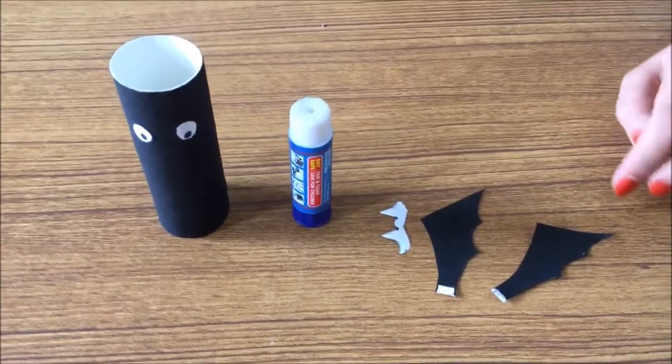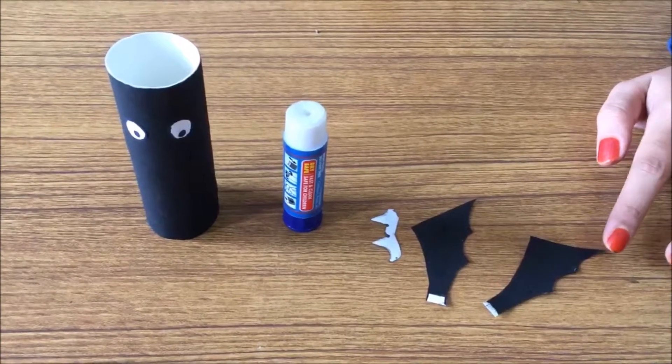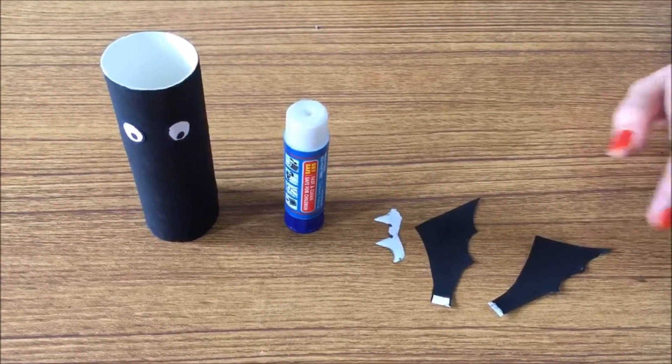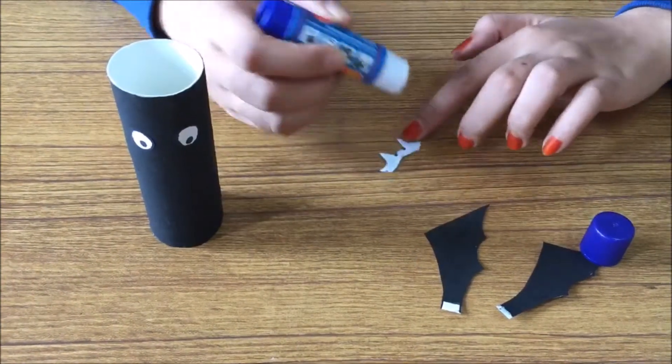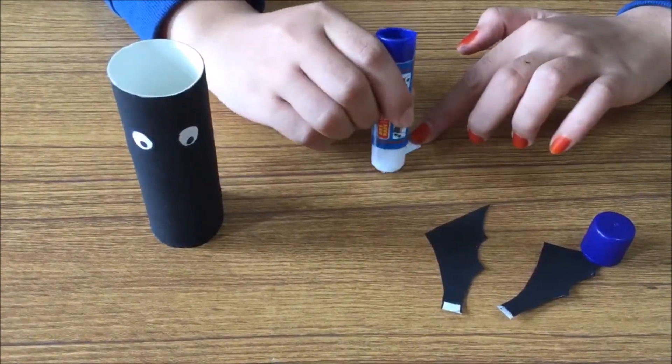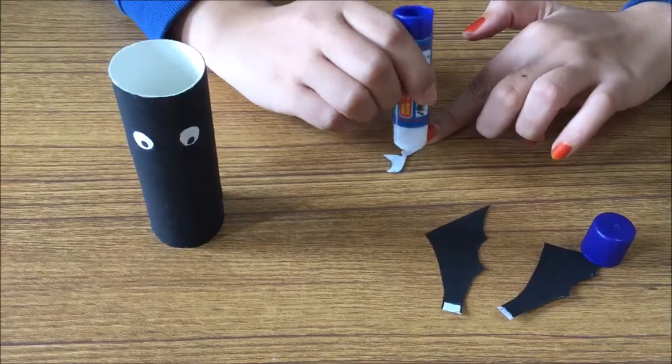And now for the second toilet paper roll, we are going to make it into a bat. So we are now going to paste the wings and also the mouth of the toilet paper roll.